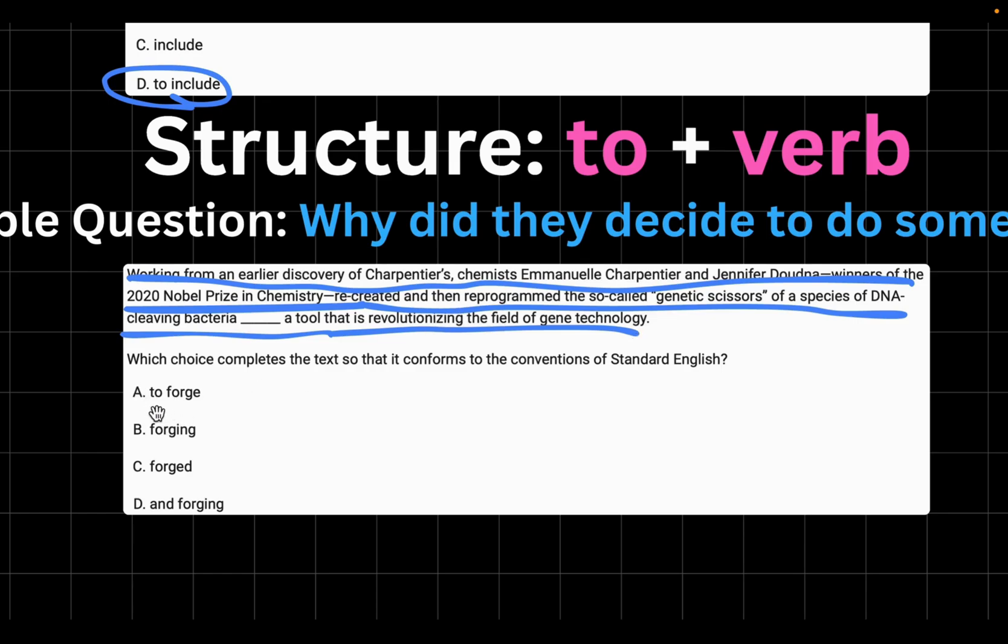However, I can see that choice A says to forge. And whenever I have an infinitive multiple choice, immediately I ask myself, why did they decide to do something? Or in this case, why did they decide to recreate and then reprogram the so-called genetic scissors of a species of DNA cleaving bacteria? Why? To forge a tool that is revolutionizing the field of gene technology. So I was able to answer this question. I was able to answer the reason why they did something. So when I'm able to answer this question, that means I can use the infinitive multiple choice, which in this case is choice A.